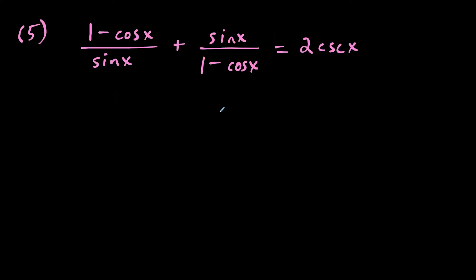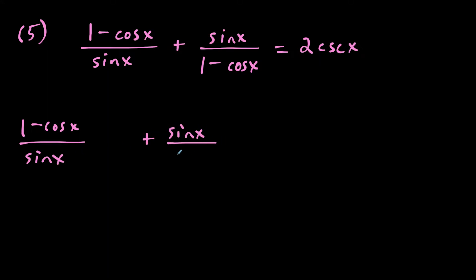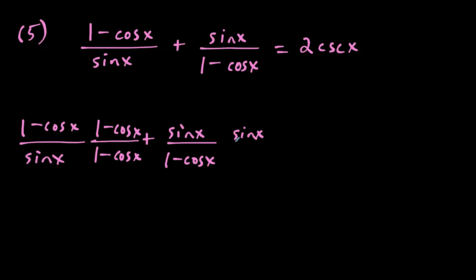For the fifth question, we start with the left-hand side because we have two fractions to combine into a single expression. We have (one minus cosine x) over sine x plus sine x over (one minus cosine x). We need matching denominators, so the first fraction is multiplied by (one minus cosine x) on top and bottom, and the second fraction is multiplied by sine x on top and bottom.